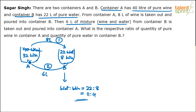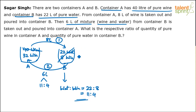Container A currently has 32 liters of pure wine, but now we add 6 liters of mixture from B, which has some water and some wine. So A will also become a wine and water mixture. The total quantity in B was 30 liters (22 + 8). From this 30 liters, 6 liters is removed, leaving 24 liters of mixture in B, still in the same 11:4 ratio.